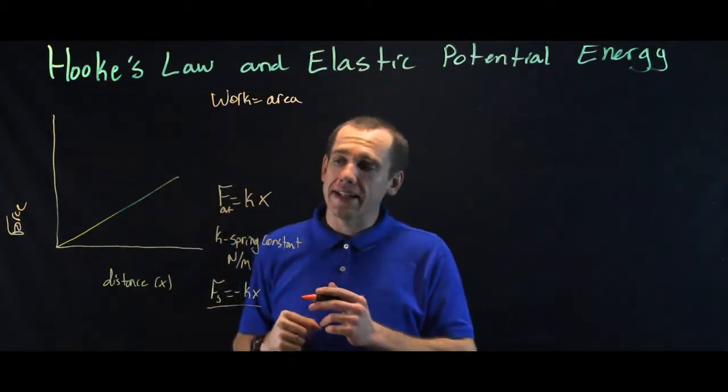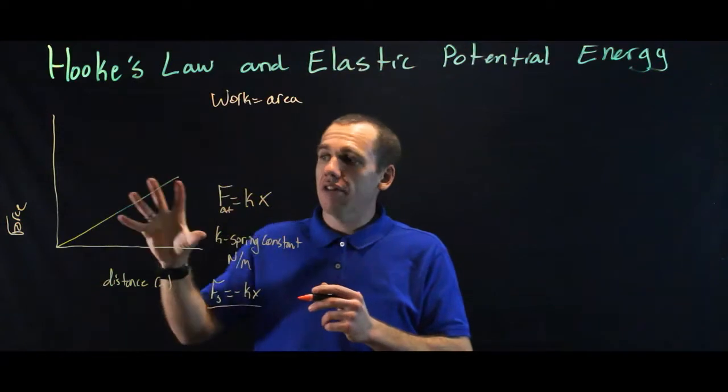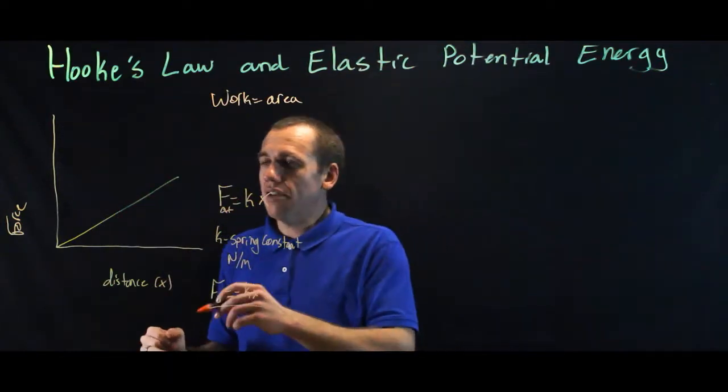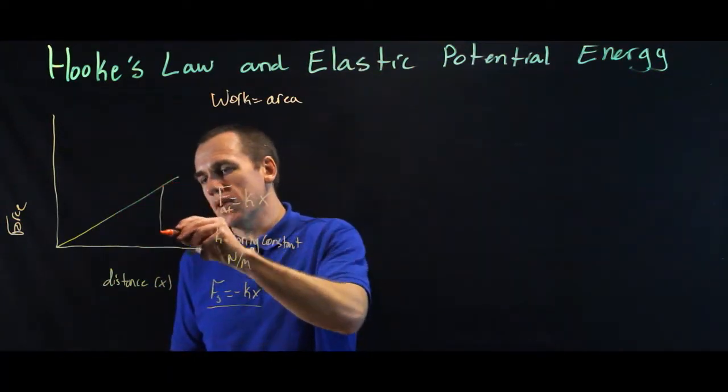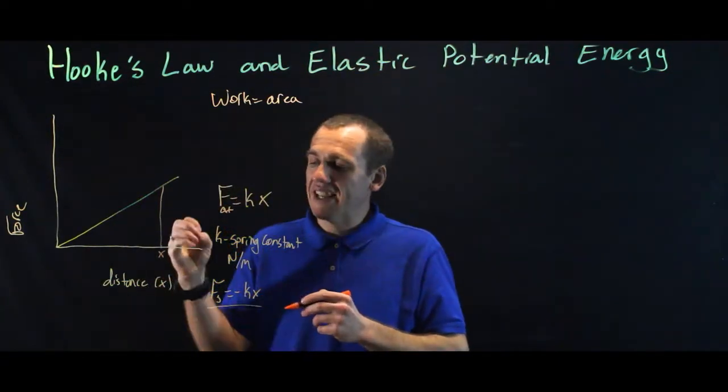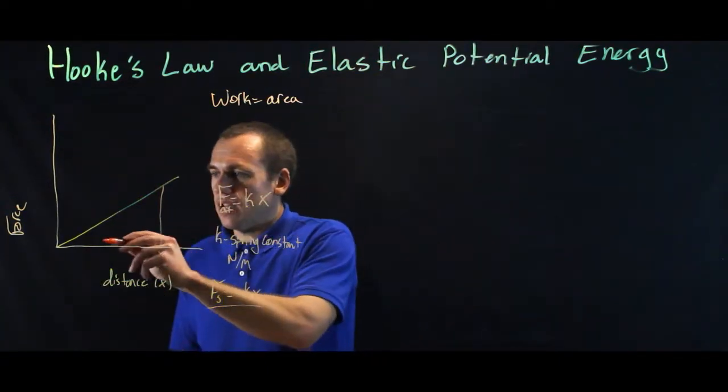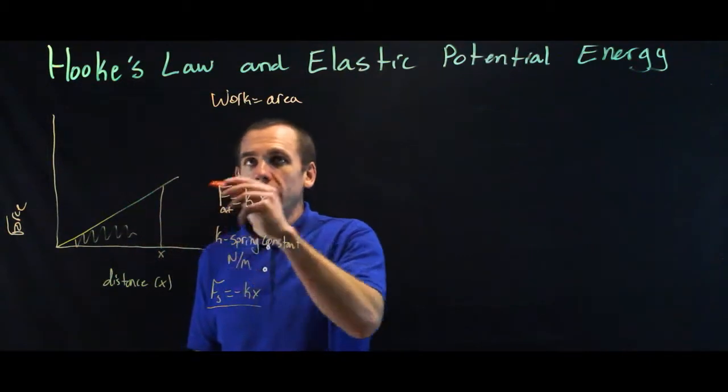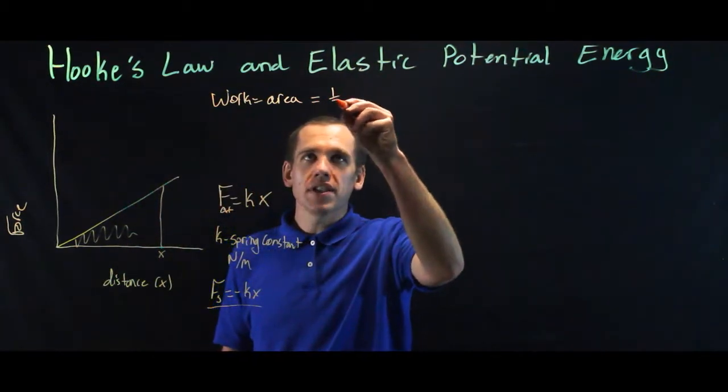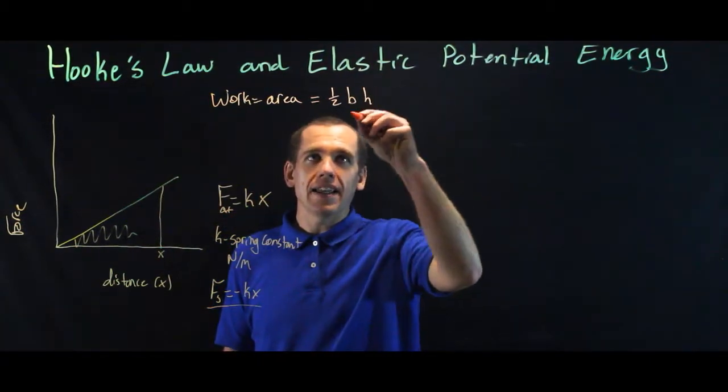But let's get back to this. Work equals the area under this curve. Well, the area is this triangle. So if we pulled it this many meters, or centimeters, whatever it is, x, then we have done the work under this curve. And that area is a triangle, so it's half the base times the height.